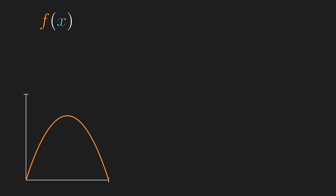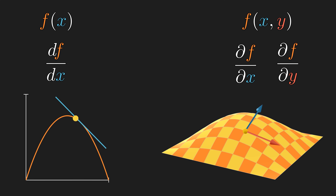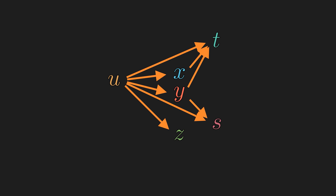The derivative of a single variable function, roughly speaking, is the slope of the tangent line at a point. And the partial derivative of a multivariable function is the slope along the direction of one of the variables, while holding every other variable constant. For a simple case like this, there is no ambiguity.